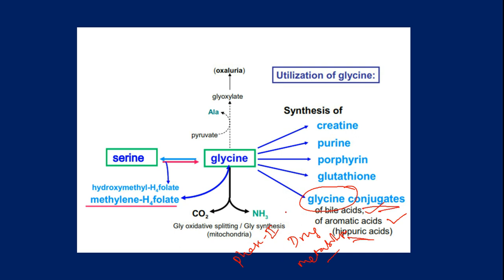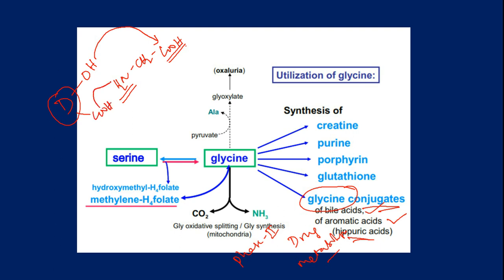Glycine is a highly polar amino acid with NH2, CH2, and COOH groups. In case of a drug molecule with a hydroxy group, that hydroxy group can be esterified with glycine's carboxylic acid to increase polarity. Or if the drug has a COOH group, it can be amidated with glycine's NH2 group. These conjugations increase the polarity of the drug. Similarly, bile acid polarity increases upon conjugation with glycine. Glycine conjugation is a very important mechanism in our phase 2 metabolic processes.